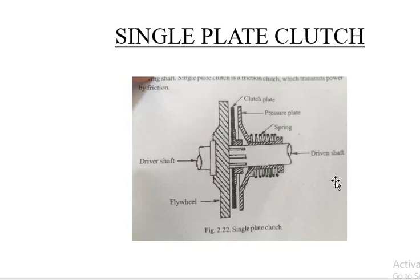Then we use the power to rotate — this is the main use. We use the clutch plate to rotate. When we engage the parts, the clutch plate rotates. It has a diaphragm spring. This is the main gear and the clutch plate with splines.